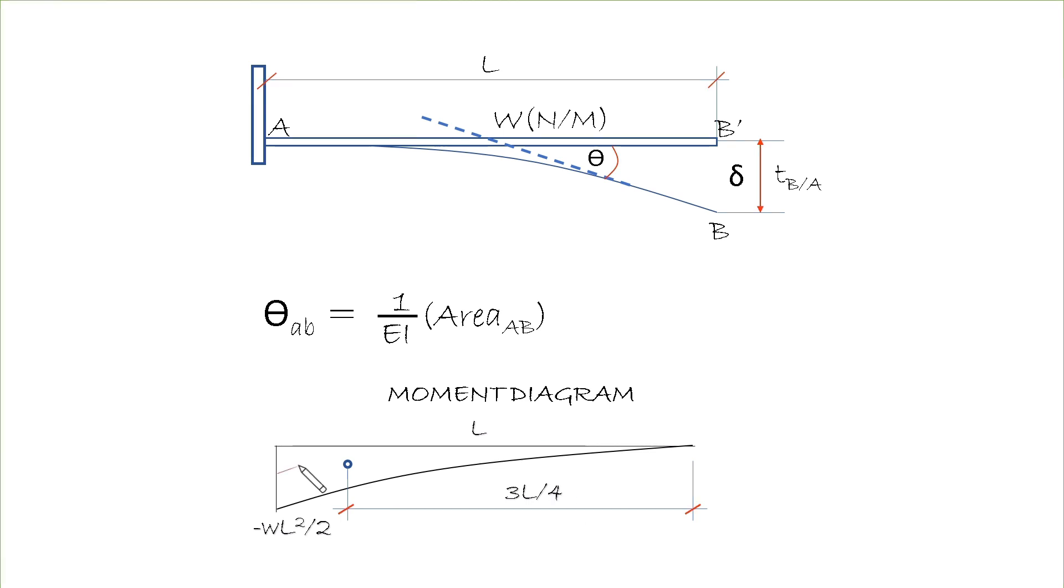The distance from the centroid of this diagram to point B is 3L over 4, and the area is equal to negative WL squared times one-third L. And so our theta AB is equal to...